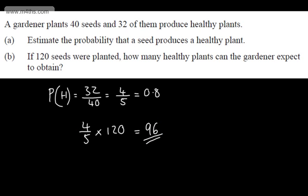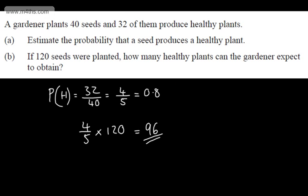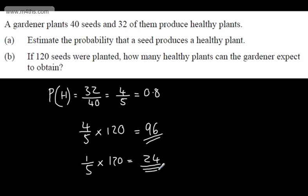In part B, if 120 seeds were planted, how many healthy plants can the gardener expect to obtain? All we need to do is multiply the probability by the number of trials: 4 fifths multiplied by 120. 120 divided by 5 is 24, times 4 gives 96. So we would expect 96 healthy plants. The unhealthy ones would be 120 minus 96, or 1 fifth of 120, which gives 24.